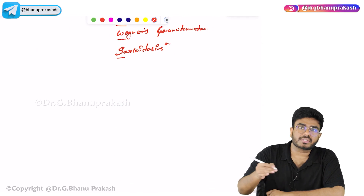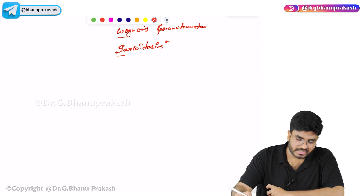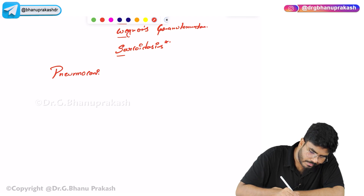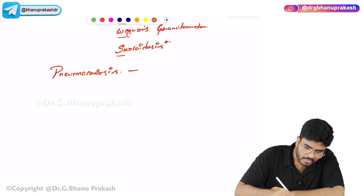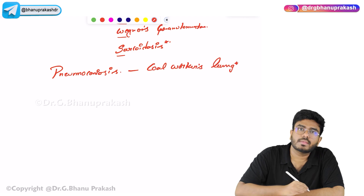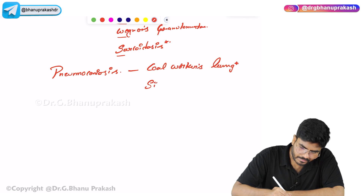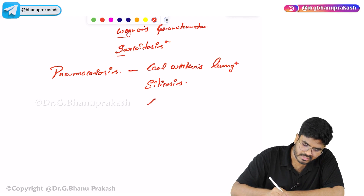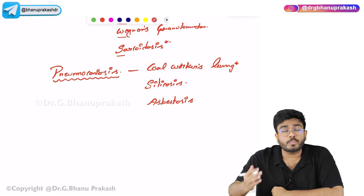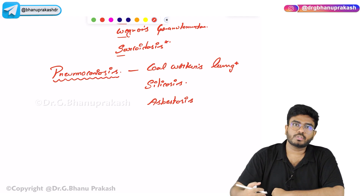Certain occupations can also lead to restrictive lung diseases or pulmonary fibrosis — these are called pneumoconiosis. Examples include coal worker's pneumoconiosis (coal worker's lung), silicosis, and asbestosis. These are all occupational lung diseases where certain occupations affect the lung leading to pulmonary fibrosis.